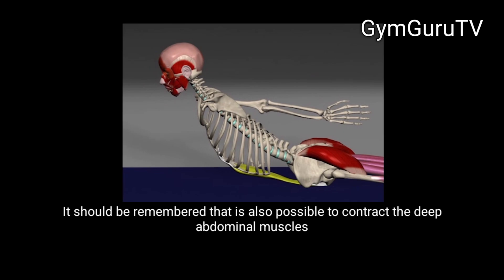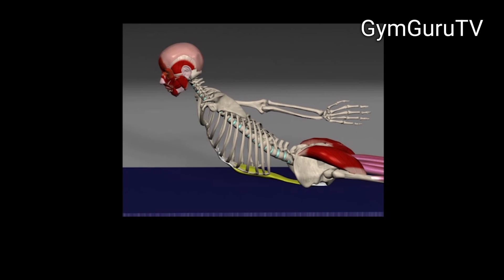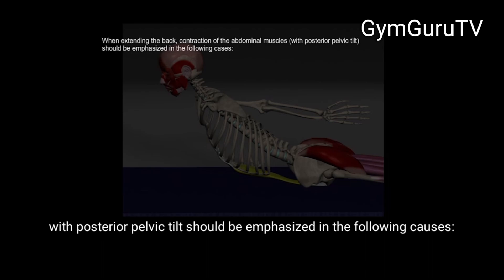It should be remembered that it is also possible to contract the deep abdominal muscles without posterior pelvic tilt in the stabilizing aspect. When extending the back, contraction of the abdominal muscles with posterior pelvic tilt should be emphasized in the following cases.